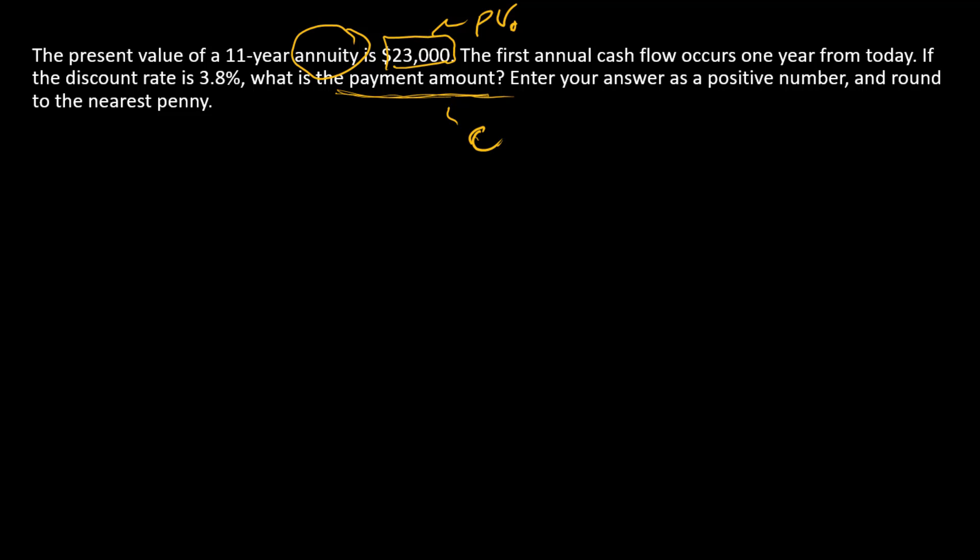It's PV at time zero, a one-time cash equivalent. We also know that there are 11 of these payments from year 1 to year 11, and we have a discount rate of 3.8%. We're given this $23,000 present value.